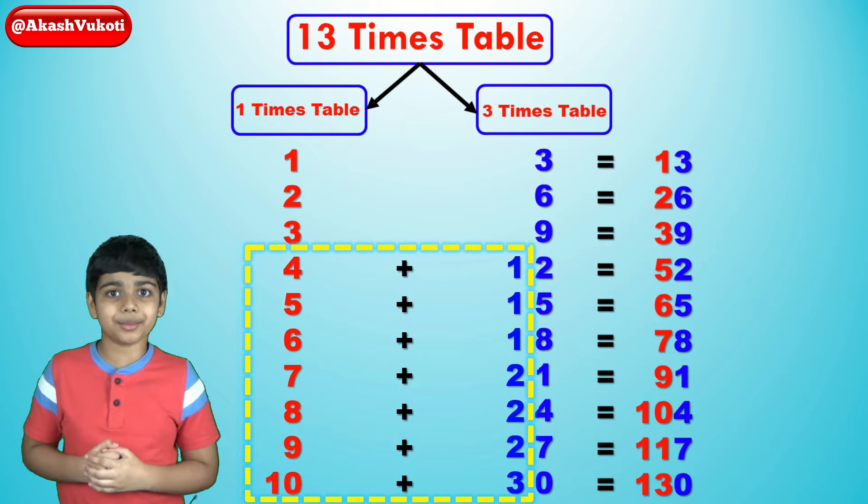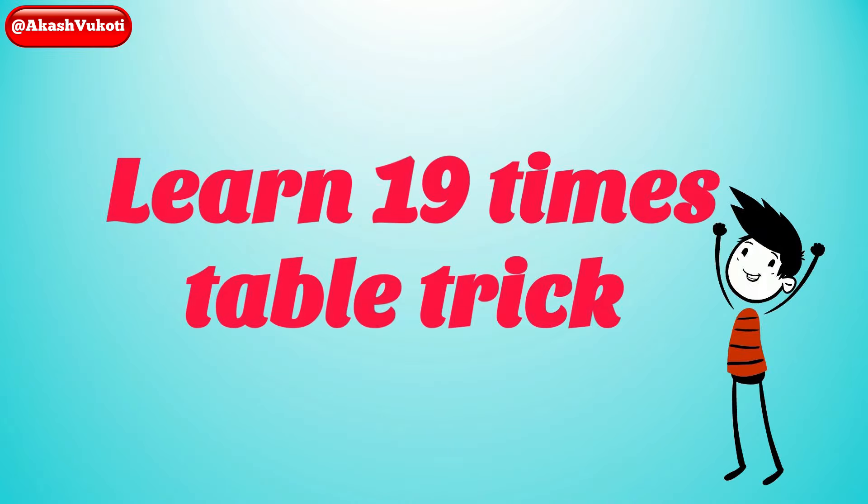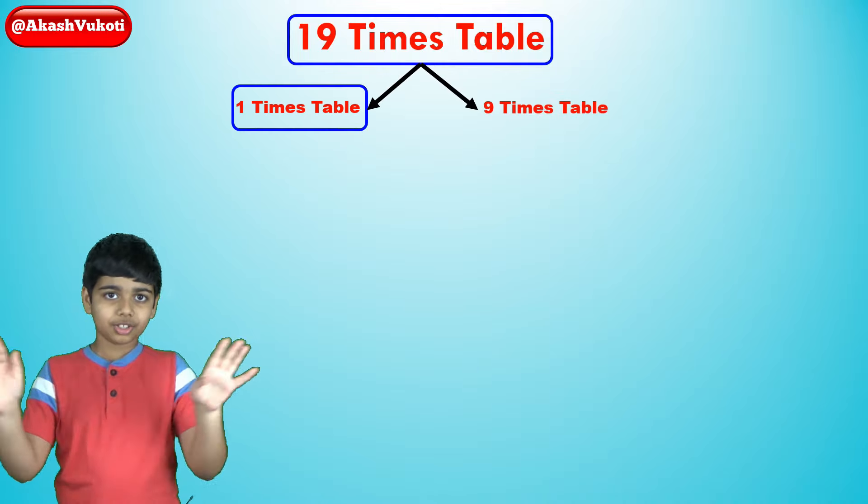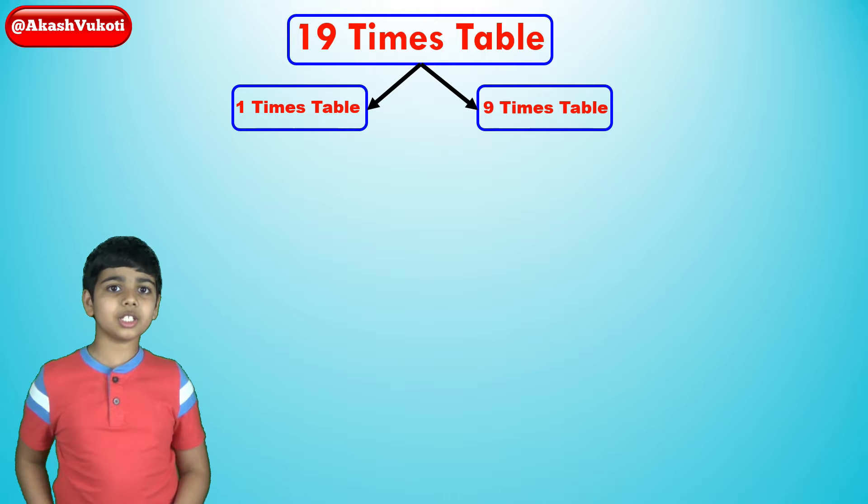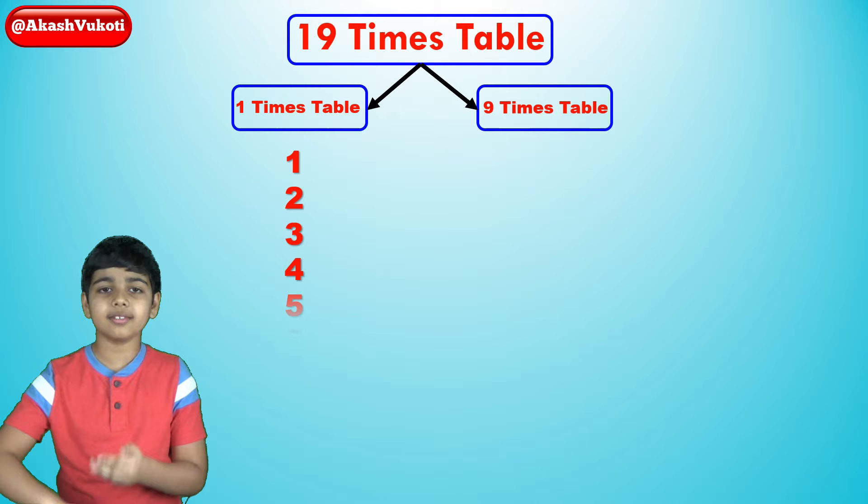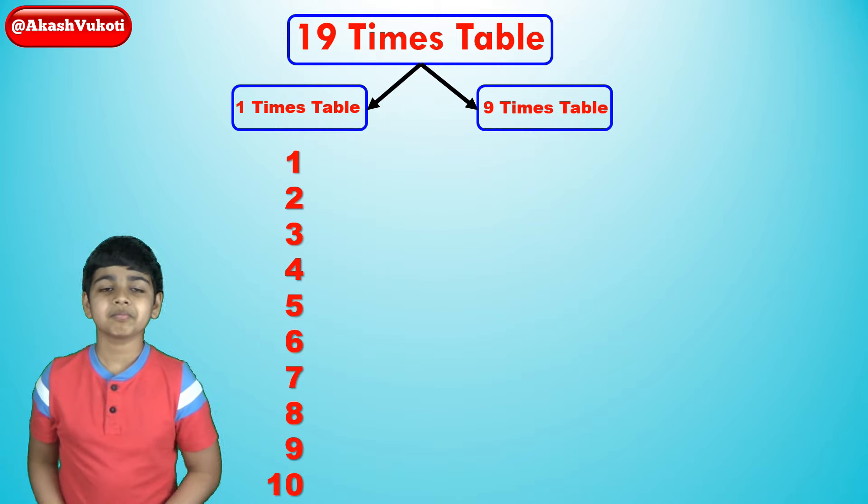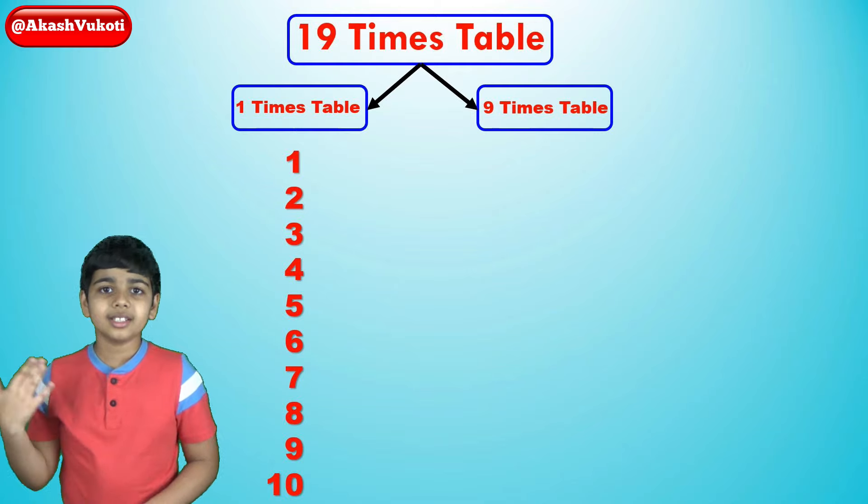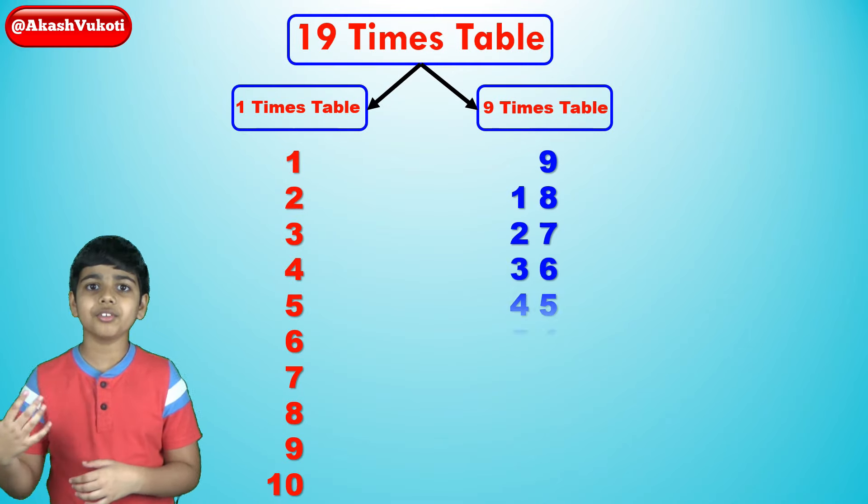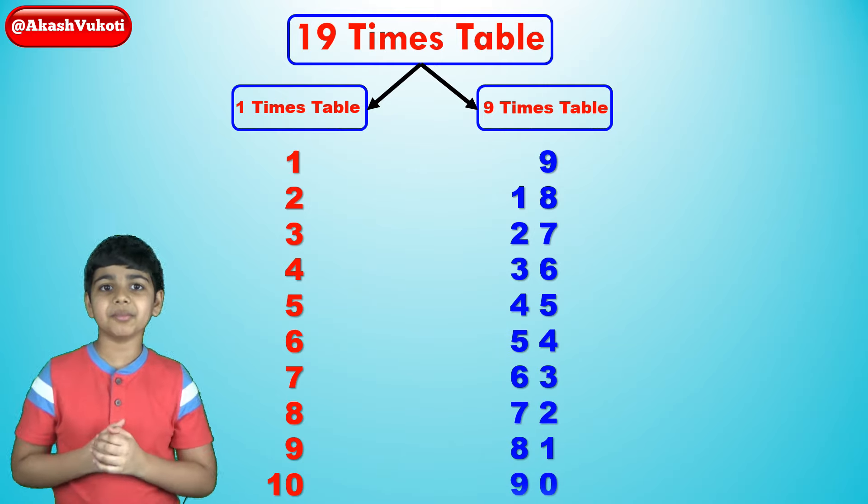Let's do another table. Say, the 19x table. Just write down the 1x table and then the 9x table next to each other. So we got 1x table, 1, 2, 3, 4, 5, 6, 7, 8, 9, 10. The 9x table would be 9, 18, 27, 36, 45, 54, 63, 72, 81, 90.